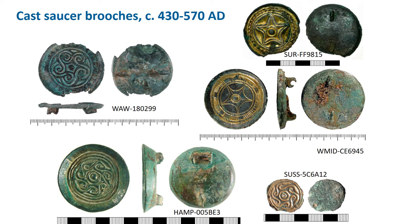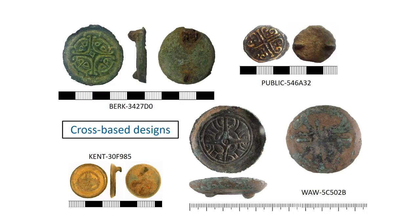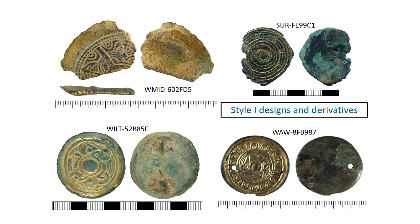Cross-based designs on cast saucer brooches include the floriated cross, which is very standardised, and some with Style 1 faces as well as crosses. The most complex motifs are the Style 1 designs — Tanya Dickinson has written an entire article on these, which is incredibly useful for understanding Style 1 in general. There is as yet no convenient typology, so nothing precise to put in the subclassification field; instead it's worth simply using some keywords based on what Dickinson calls them in her 1993 article. Occasionally a hole in the brooch indicates a repair, which is quite common.